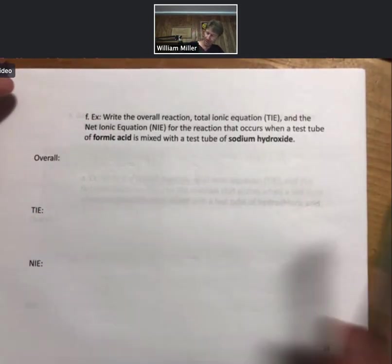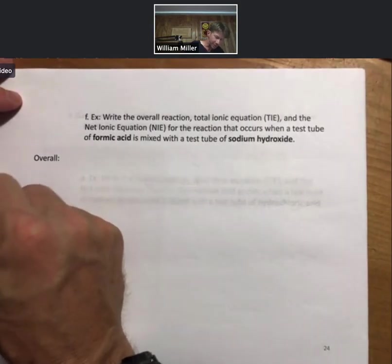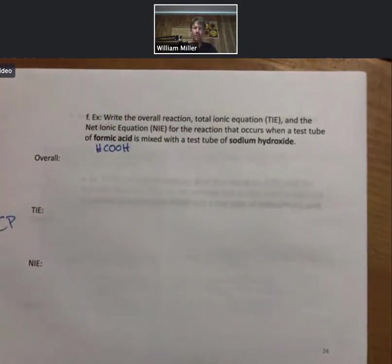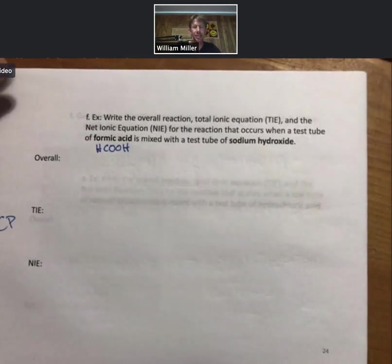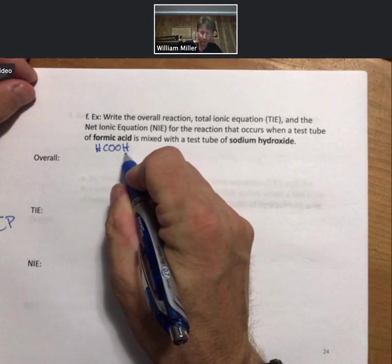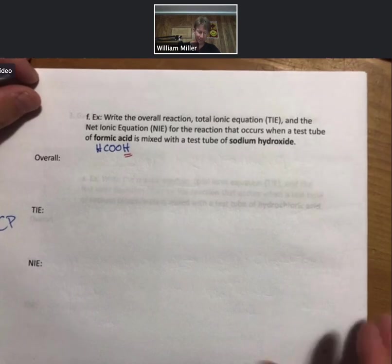This will be a companion problem. For the companion problem, you can look up or I will tell you that the formula for formic acid is HCOOH. Where the H in the COOH group, this H right here, is going to be the acidic H, the H plus.